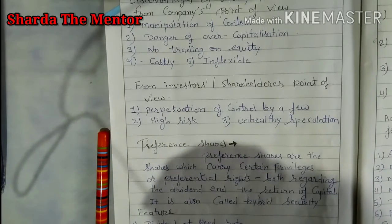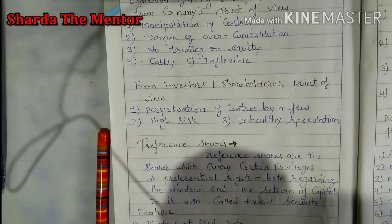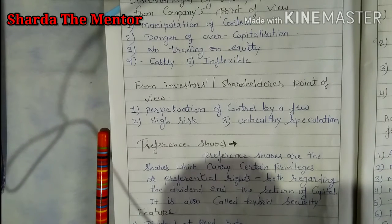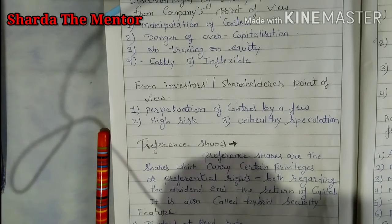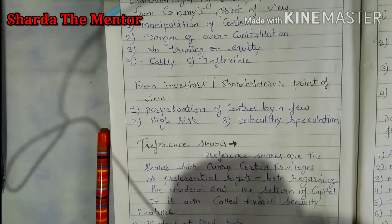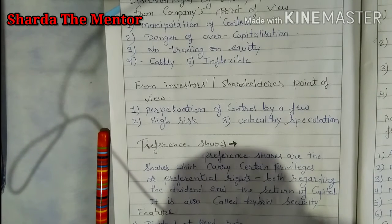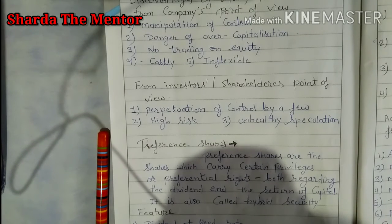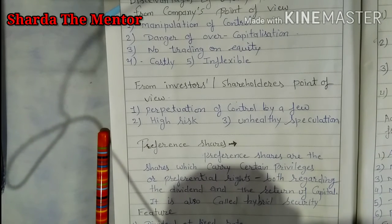Next point is high risk. Equity shares are always considered a high-risk security because returns depend on the company's prosperity. If the company is getting higher profit, equity shareholders get higher dividends. But if the company faces a crisis or winding-up situation, equity shareholders get their return last — first the company pays outside liabilities like creditors and banks, then debenture holders, then preference shareholders, and only if anything remains do equity shareholders get their investment back.